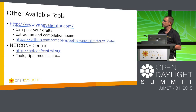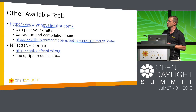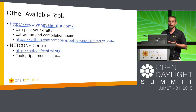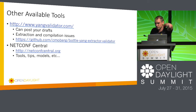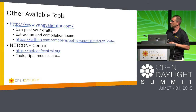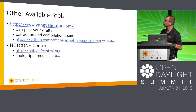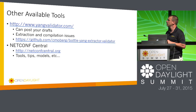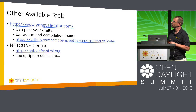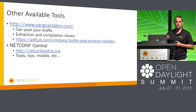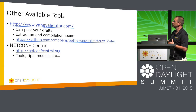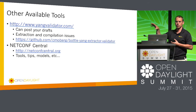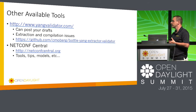There are other available tools for validation and modeling. There's the Yang validator — a web-based front end for Pyang, an open source compiler on GitHub. You can take your model, upload it, compile it, see if it's valid, and check your dependencies. This is useful since Yang tools themselves don't really help with model validation.